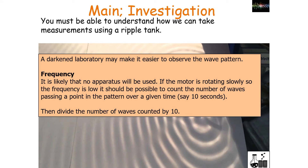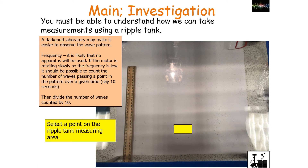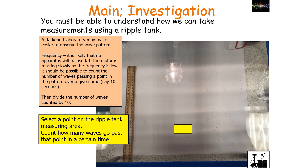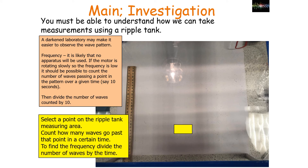To measure the frequency, a darkened lab makes it easy to observe the wave pattern. You need only a stopwatch: look at a particular point and measure how many waves pass that point in a certain time frame — say 10 seconds — then divide the number counted by the time to work out your frequency. Select a point in the ripple tank area, count how many waves go past in a certain time, and divide the number of waves by the time.